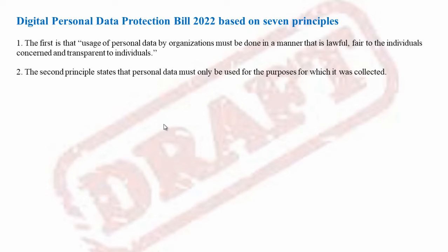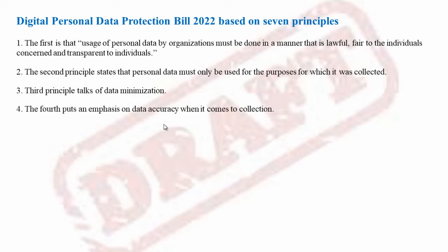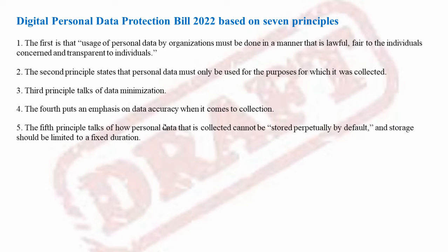The second principle states that personal data must only be used for the purposes for which it was collected. The third principle talks of data minimization. The fourth puts an emphasis on data accuracy when it comes to collection. The fifth principle talks of how personal data that is collected cannot be stored perpetually by default and storage should be limited to a fixed duration.